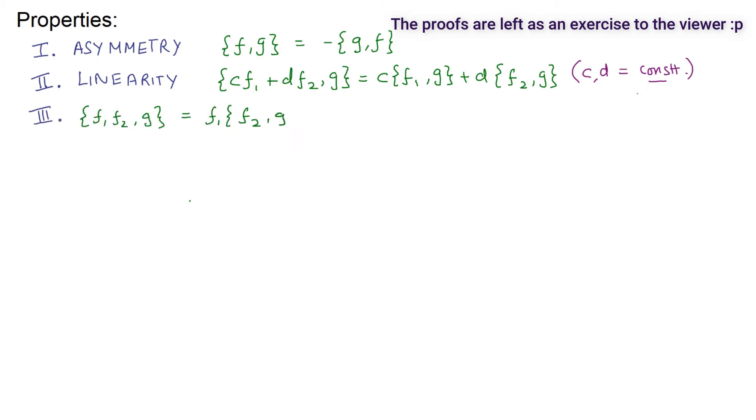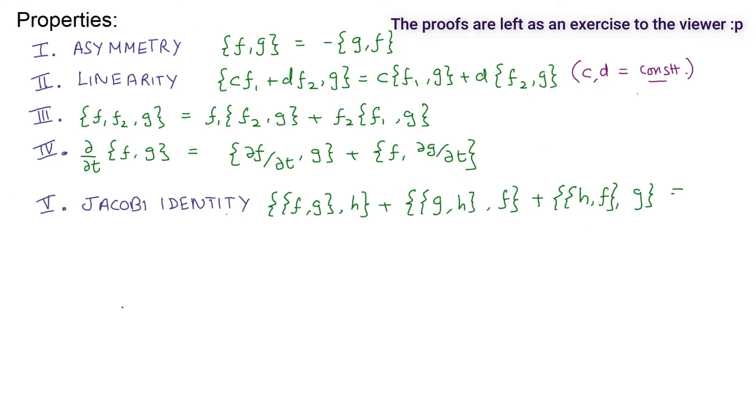We also have a rule for products, and one for time derivatives. Another important property is Jacobi's identity, which is a little painful to prove.